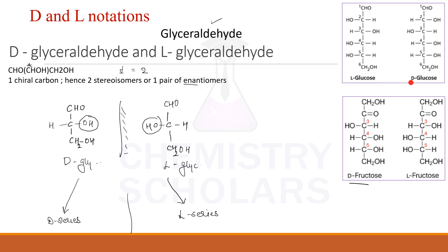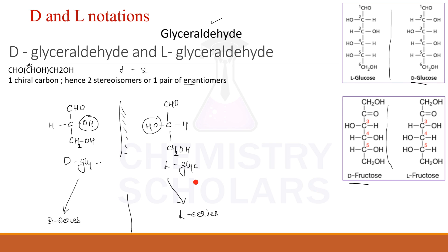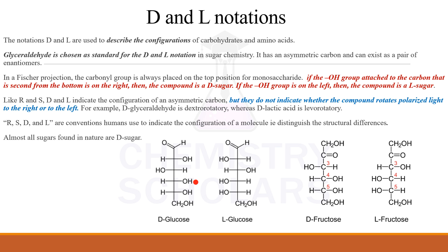For example, D-glucose is derived from D-glyceraldehyde — we will see what that derived word means later. If you look at L-glucose, it is exactly the mirror image of D-glucose. Similarly, D-fructose is exactly the mirror image of L-fructose. So remember, D and L are always mirror images of each other.